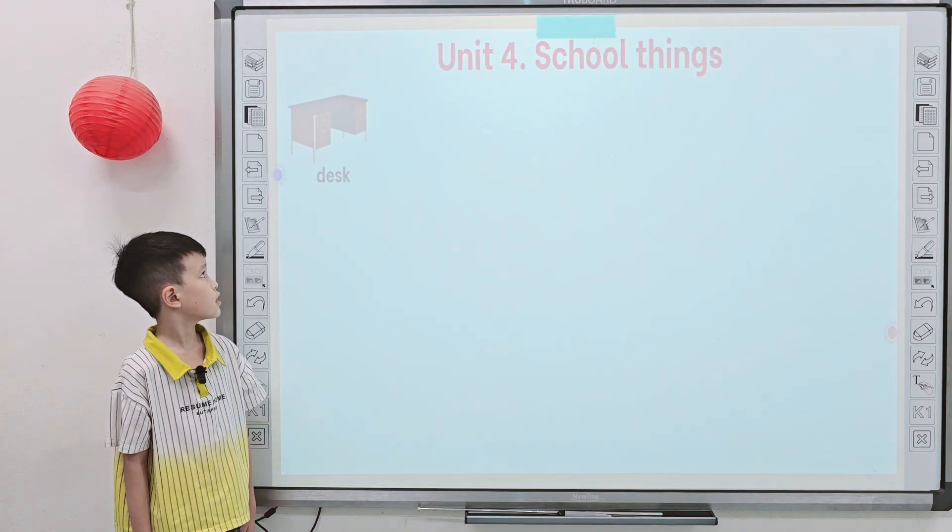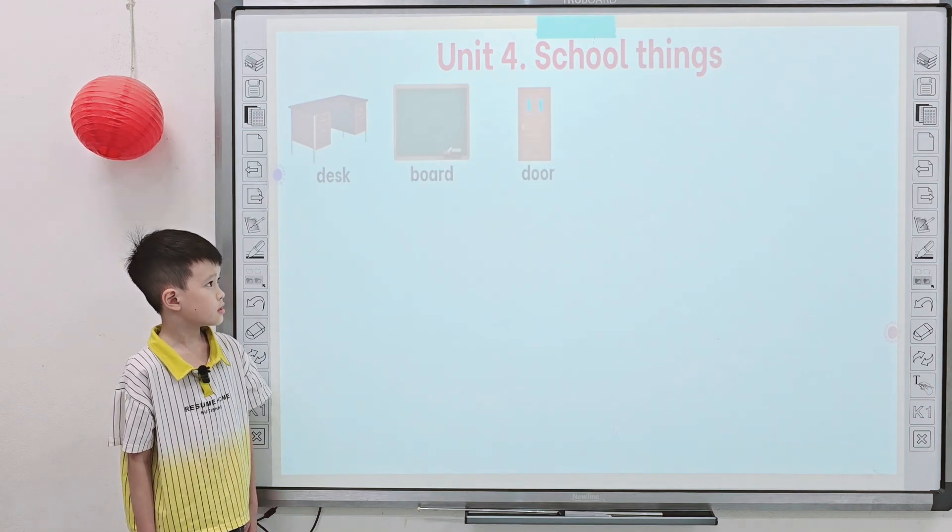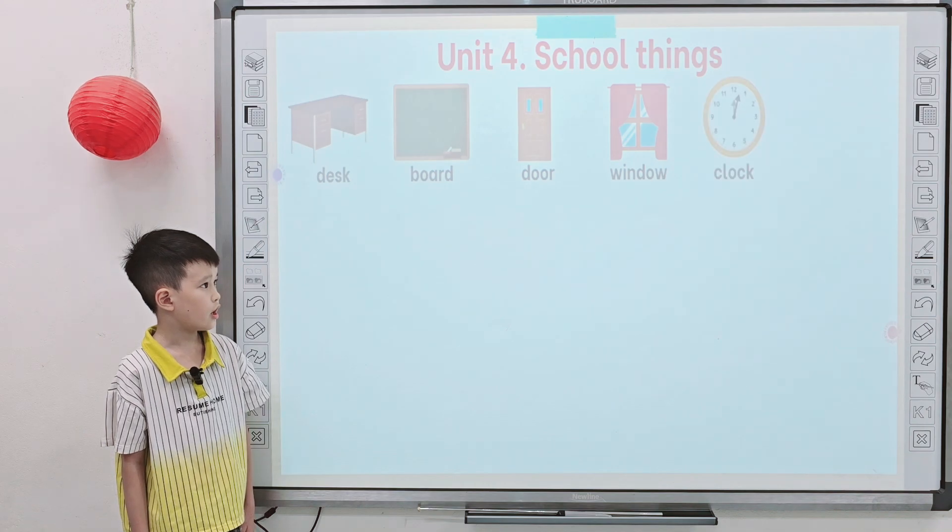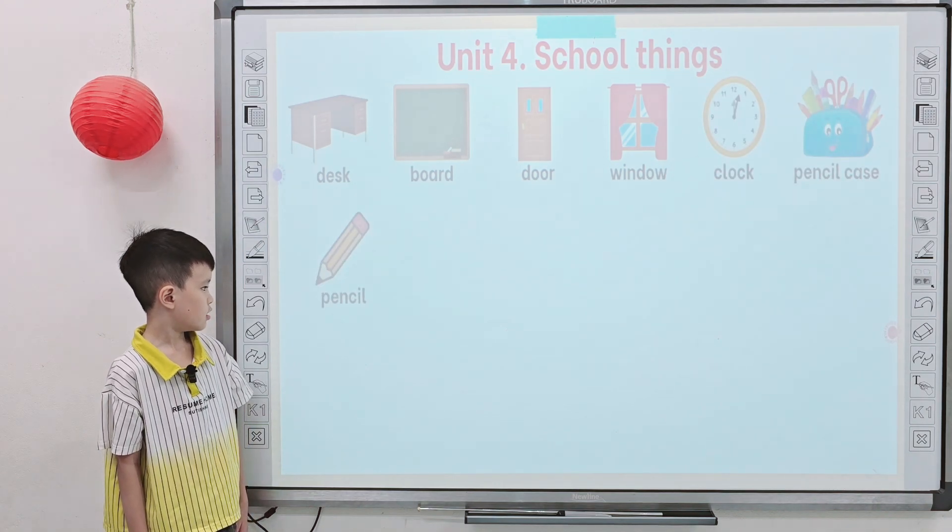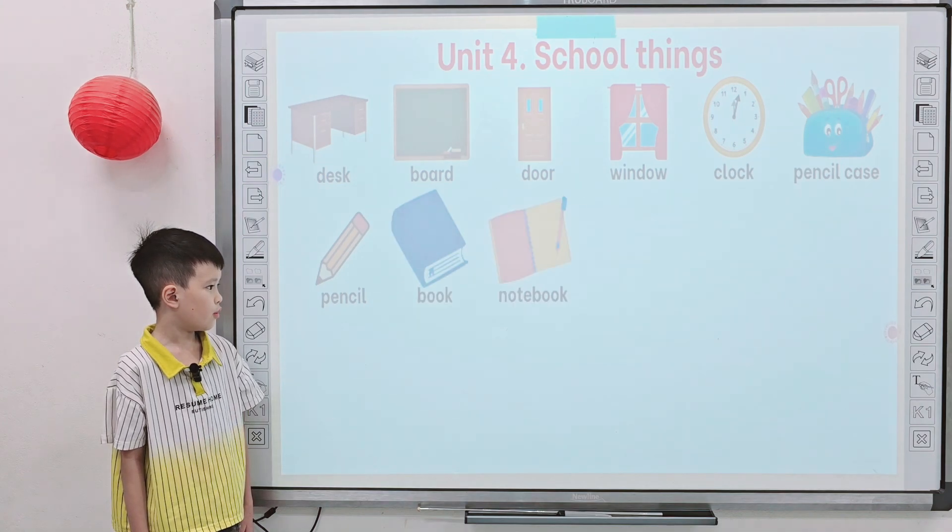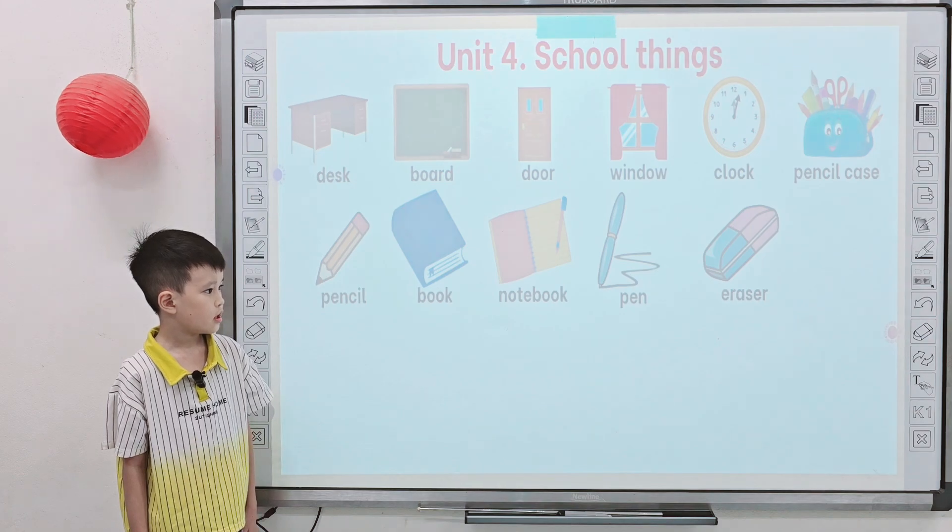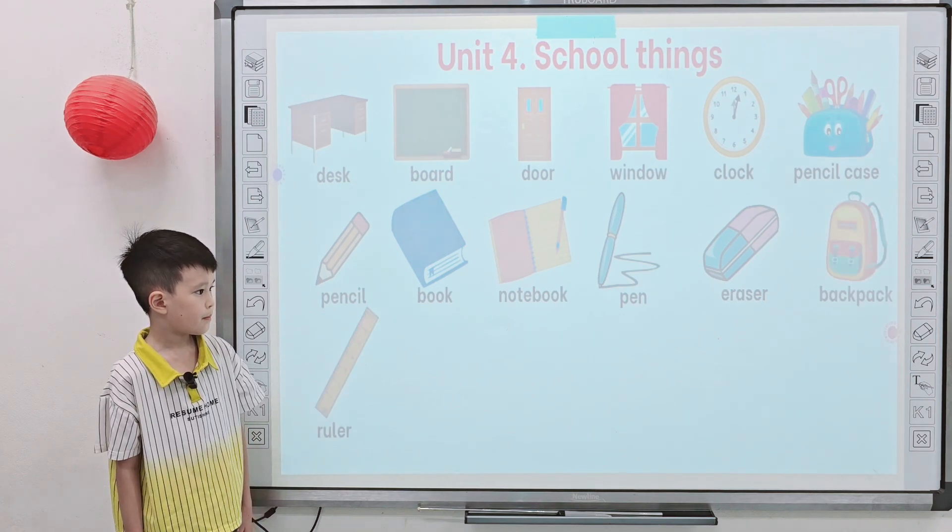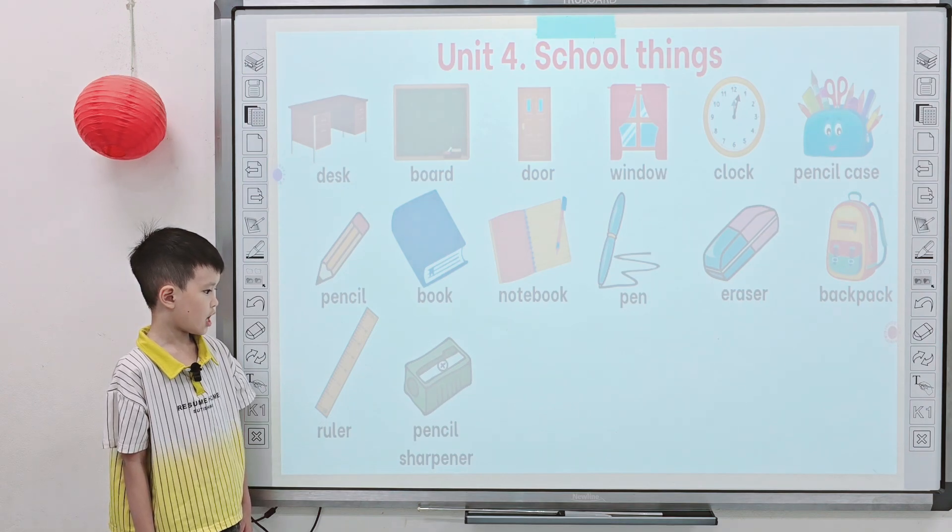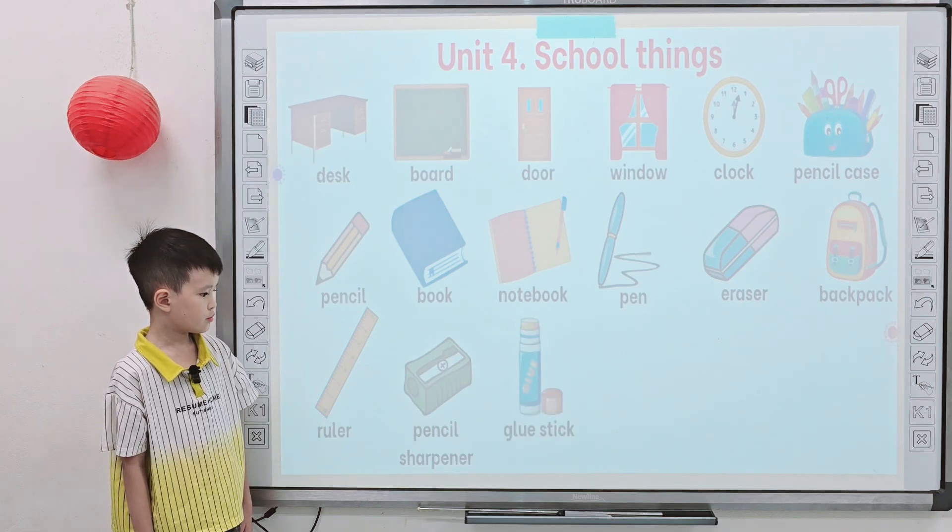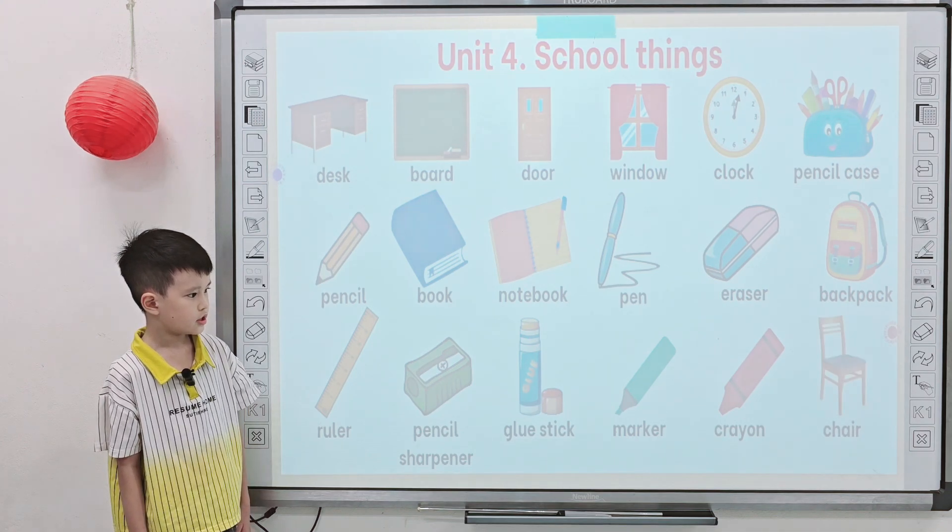Beautiful school thing. Tell me, what is it? It's a desk. It's a box. It's a door. It's a window. It's a clock. It's a pencil case. It's a pencil. It's a book. It's a notebook. It's a pen. It's an eraser. It's a backpack. Great, next one. It's a ruler. It's a pencil sharpener. It's a glue stick. It's a marker. It's a crayon. It's a chair.